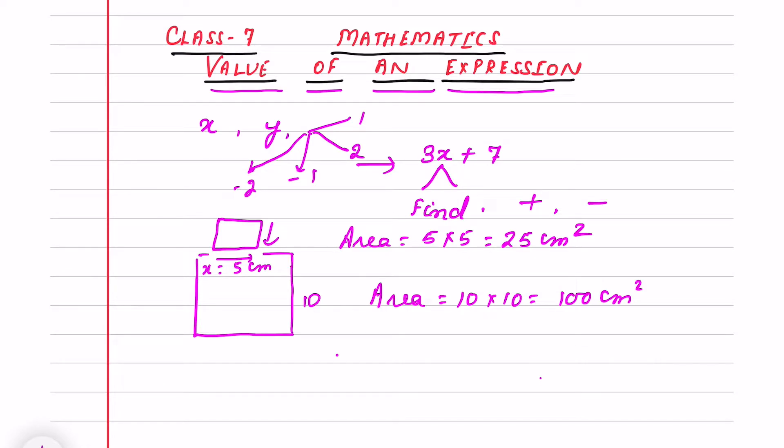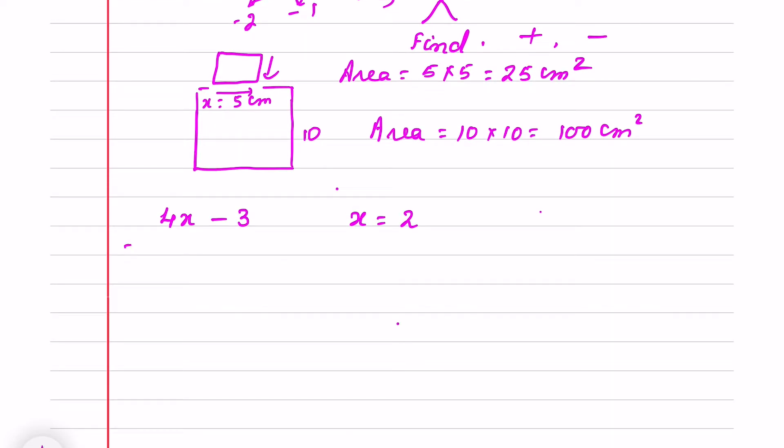So how to find out if the value is given. Suppose expression is given 4x minus 3 and I have to find out when x equals to 2. So what you have to do just put the value instead of x I put the value 2 minus 3. Now I will multiply here as outside the bracket no sign means multiplication. So 4 into 2 will be 8. 8 minus 3 is 5. So 5 will be answered for expression 4x minus 3 when x is 2.